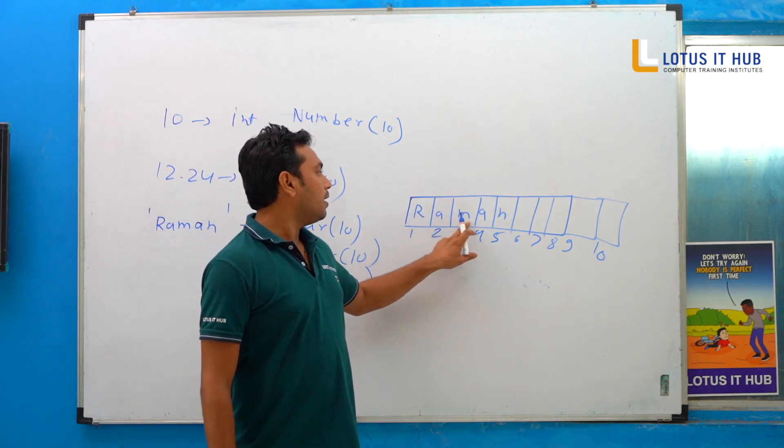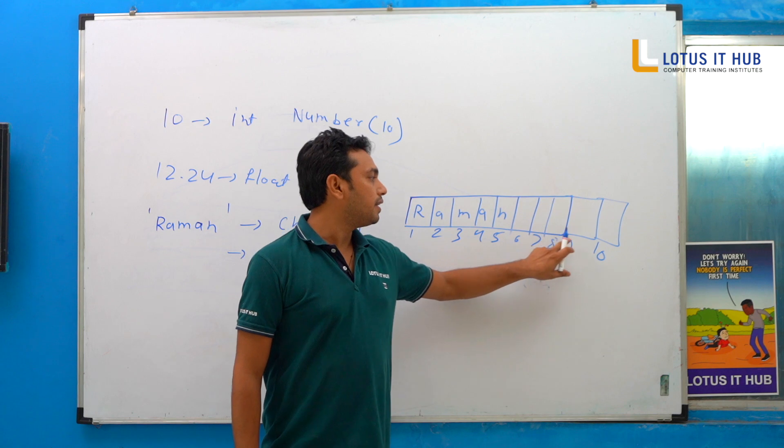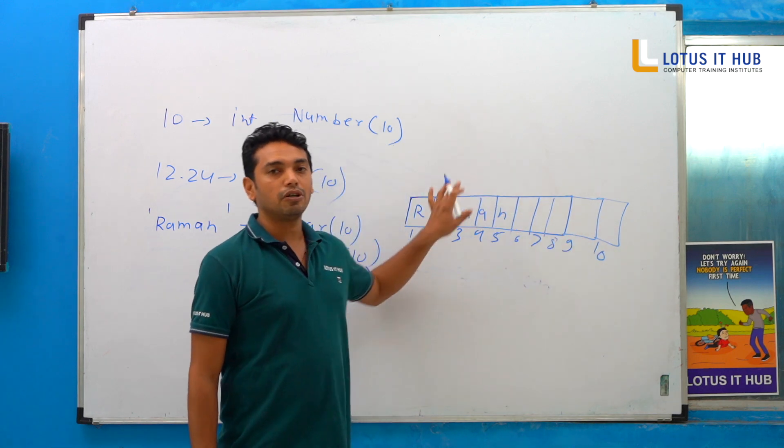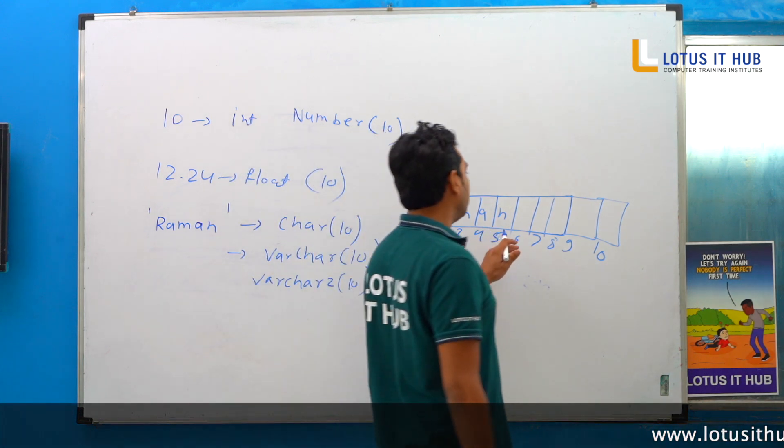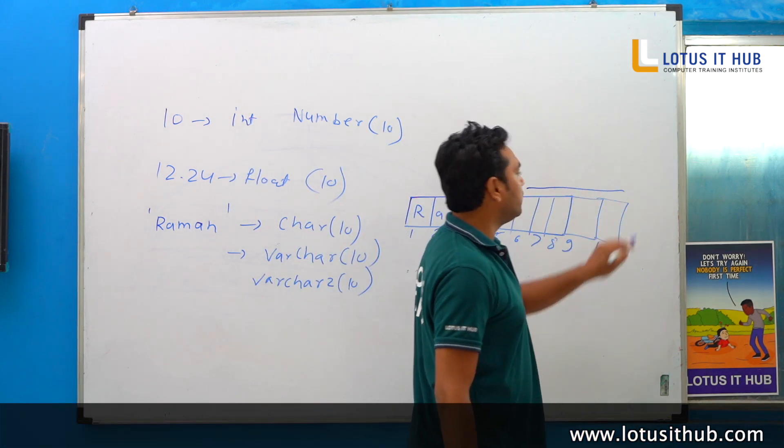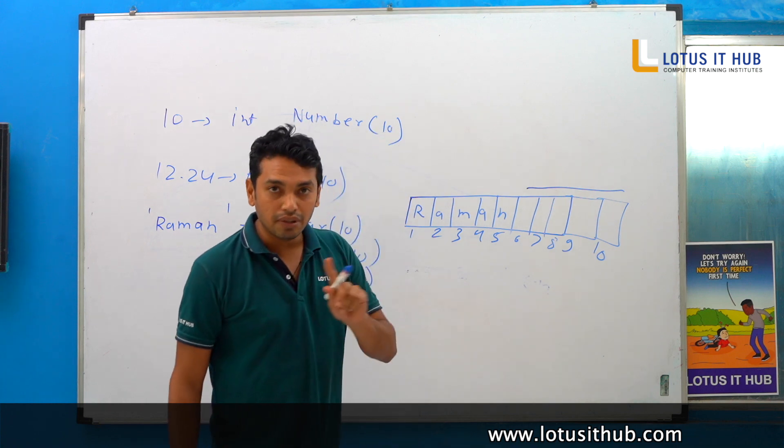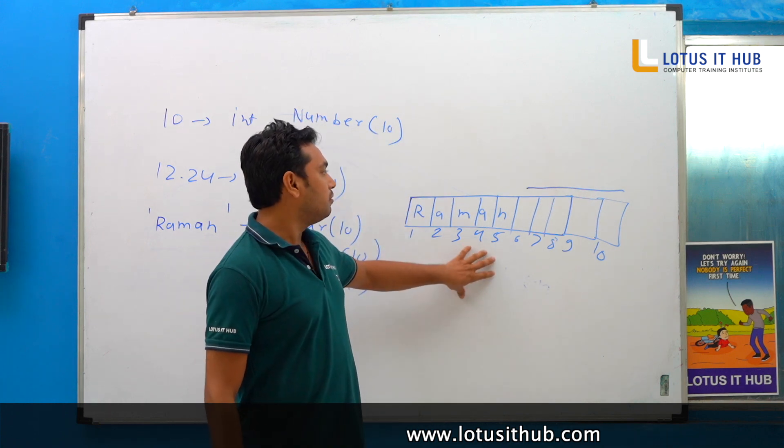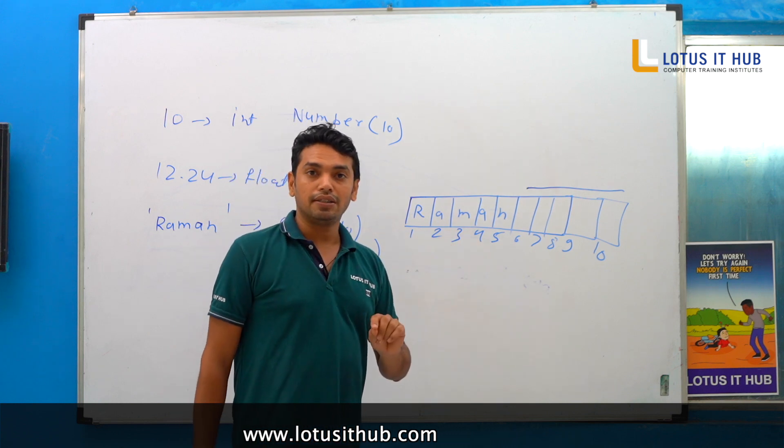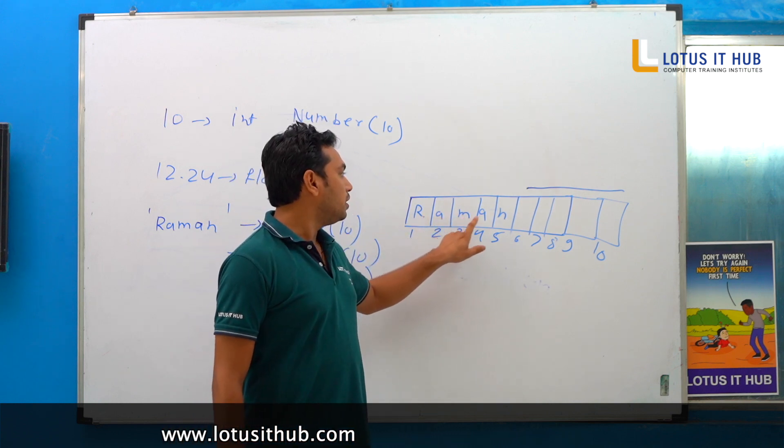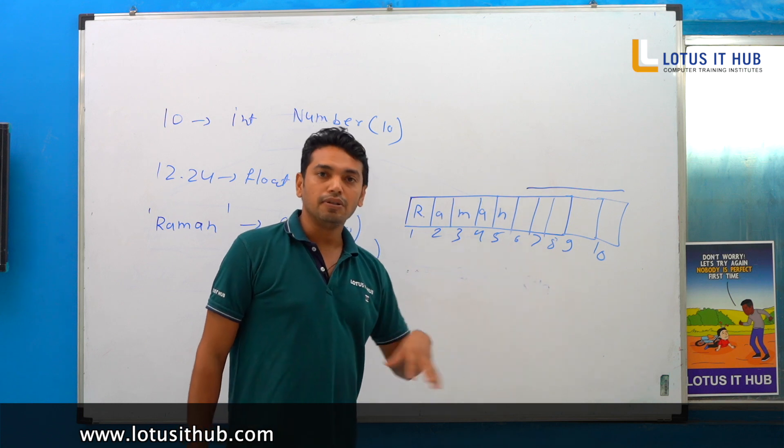Raman: R, A, M, A, N, 6, 7, 8, 9, 10. The total size is 10. Number of characters is 5. What about rest of memory? This memory is reusable. This memory is reusable in VARCHAR. You can note it down. In VARCHAR, it takes variable length: 1, 2, 3, 4, 5. Rest will be reusable.